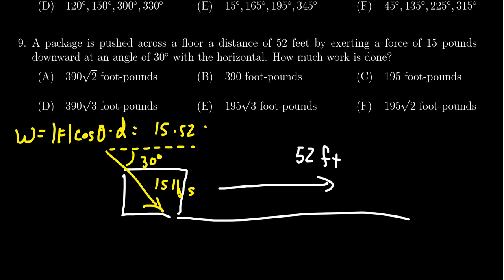And then this happened to be cosine of 30 degrees. We're going to have to do this without a calculator here. Cosine of 30 degrees, of course, is going to be root 3 over 2. So we have 15 times 52 times root 3 over 2.